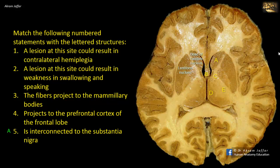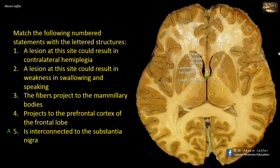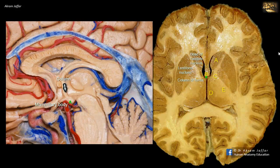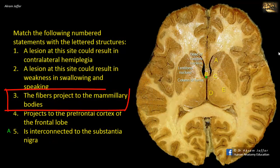B is the anterior part of the fornix called the column of the fornix. The fornix is a bundle of association fibers in the limbic system. These fibers begin on the surface of the hippocampus, aggregate medially as the fimbria, continue as the crura on left and right sides. The crura come together in the midline forming the body of the fornix, which travels anteriorly and divides again into columns. Each column continues through the hypothalamus to reach the mammillary bodies. Hence B matches with 3: the fibers project to mammillary bodies.